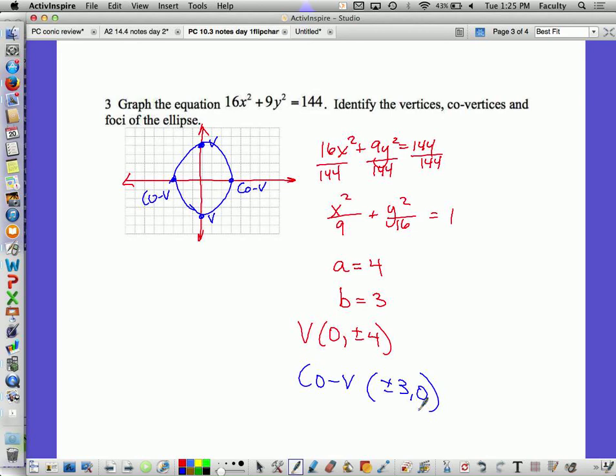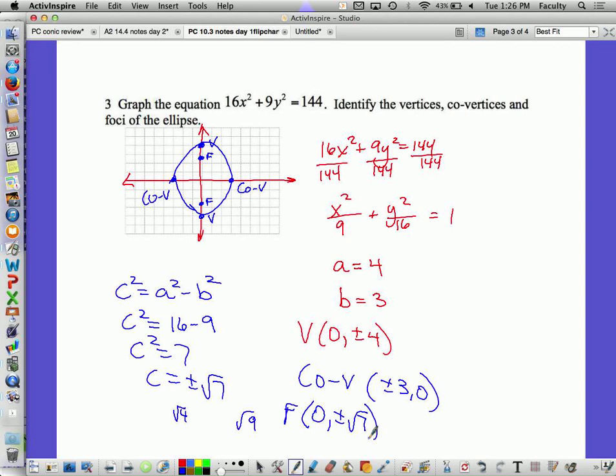And now I need the foci. C squared equals A squared minus B squared. So that's 16 minus 9. So C is plus or minus the square root of 7. And I want to encourage you not to get dependent on your calculator. The square root of 7 is in between the square root of 4 and the square root of 9. I don't have to be perfect here. I know that's a number between 2 and 3, and it's closer to the 3. So it's on the major axis, and it's really close to 3. So to identify it, the foci, then, is going to be 0, plus or minus the square root of 7. Let's double-check our work. We graphed it. We graphed the vertices, the co-vertices, the foci, and then we've identified them in our work.